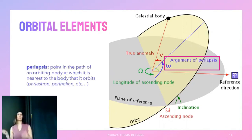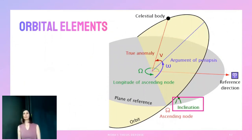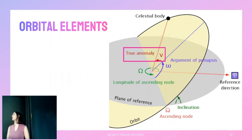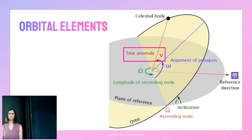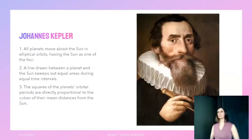Next we have lowercase omega, the argument of periapsis — the point in the orbit where the planet is closest to the star, measured from the ascending node in the orbital plane. Then we have inclination i, the angle the orbital plane makes with the reference plane. Finally, true anomaly nu is the angle of the planet's location at some given point in time measured relative to periapsis. The first five parameters define the shape and orientation of the ellipse; true anomaly tells you where you can actually find the planet.